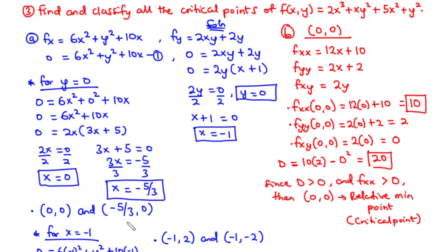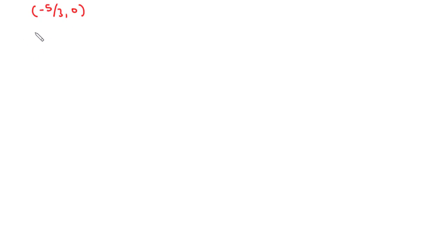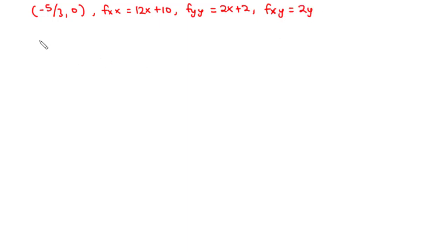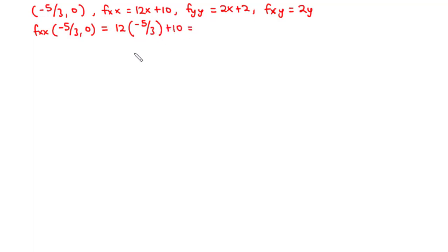Now let's move on to the next point, which is (−5/3, 0). fxx(−5/3, 0) equals 12 times (−5/3) plus 10. Here, 3 goes into 12 four times, so 4 times negative 5 is negative 20, plus 10 equals negative 10.